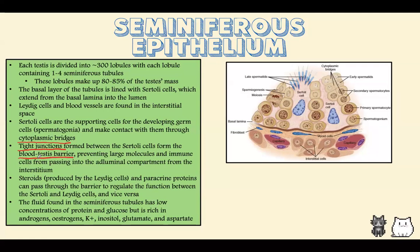The blood-testis barrier is very important. It prevents large molecules and immune cells from passing into the adluminal compartment from the interstitium. Steroids and paracrine proteins can pass through because they're lipophilic and are needed — they're important for spermatogenesis and help regulate the function between Sertoli cells and Leydig cells. There is also fluid found in the seminiferous tubules that has a lower concentration of proteins and glucose but is rich in androgens, estrogens, potassium, inositol, glutamate, and aspartate.